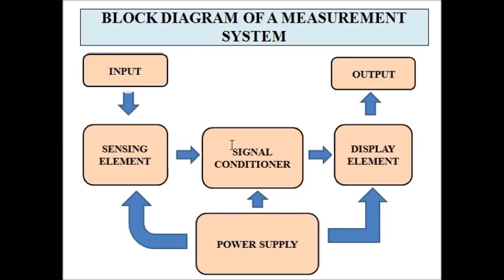This is the block diagram of a general measurement system. There can be more units or elements added to it — this is just a simplified version for better understanding. In today's video we discussed the basic functioning of a measurement system in terms of its block diagram and the individual units. In the upcoming videos I am going to post a lot of content related to sensors, transducers, and other instrumentation systems. Please subscribe to the Engineering Tutorial channel for more videos related to electrical and electronics engineering.